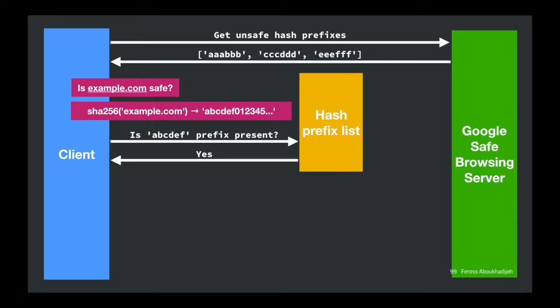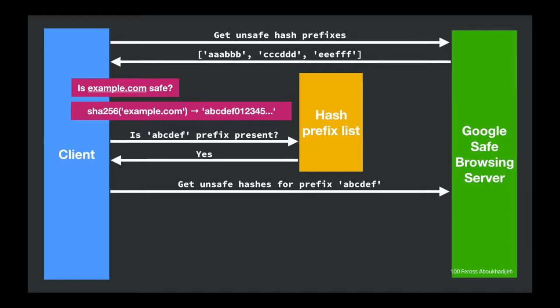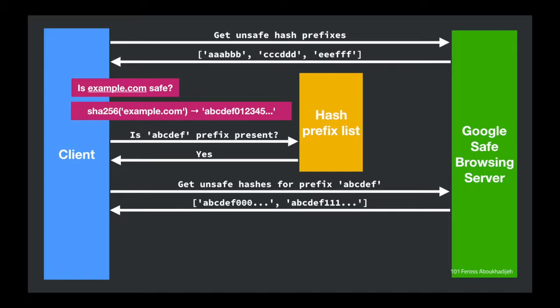What if the URL IS in the prefix list? We find it may be unsafe. Rather than sending the full URL to Google, we send just the prefix that our URL starts with. Google sends back the full hash list where all hashes share that prefix. We then compare our full SHA-256 hash to this list — if it's there, we know it's unsafe. If not, we have a safe URL.